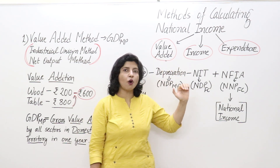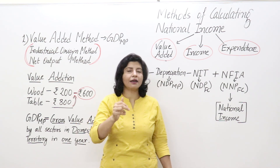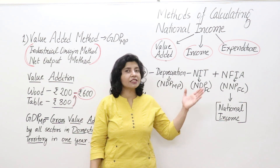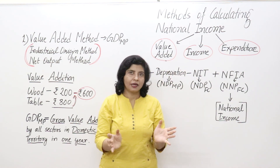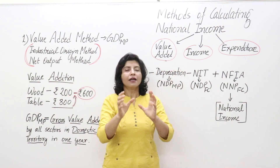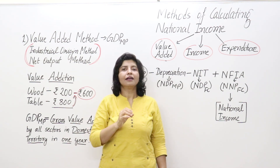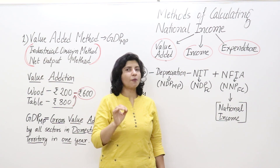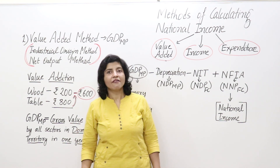Before discussing methods of calculation of national income, let us get reminded of our circular flow of income. The circular flow of income tells us that money keeps on moving from one sector to another, from one hand to another, between the phases of your circular flow. The different phases are: production phase, income phase, and expenditure phase. In the production phase you produce some output; in the income phase you distribute that output as income to different factors of production; and in the expenditure phase they spend it on goods and services.